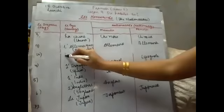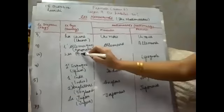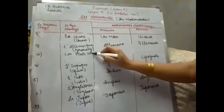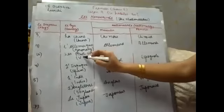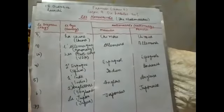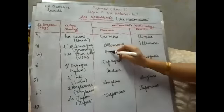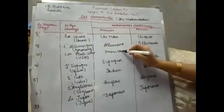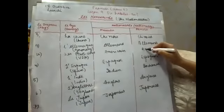Next, the tenth and the last one is Les États-Unis, that is USA, United States of America. The nationality will be Américain and Américaine with an E.